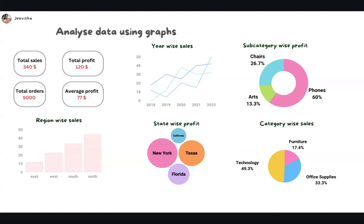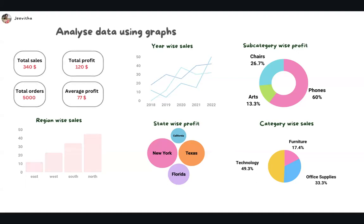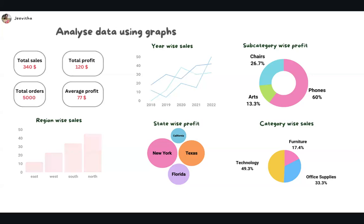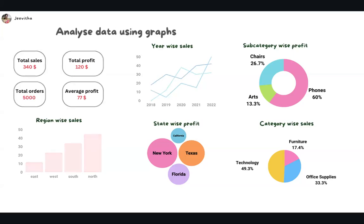We try to apply certain statistical terms in order to understand the data. It's really hard to understand data just by looking at the numbers, so what we do is try to do analysis by using different graphs or visualizations. The easiest way that anybody can understand data is just by plotting different graphs. You can see here we have a line chart which gives information about year-wise sales, subcategory-wise profit, region-wise sales, state-wise profit, and category-wise sales. We use different graphs to analyze what exactly is happening in our business to make better decisions.